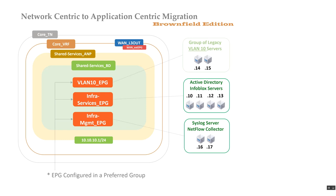They're grouped at a macro level. You could call out domain controllers and Infoblox servers separately, but in practice customers prefer the macro level because it's easier to get comfortable with ACI. Doing micro-level segmentation in a brownfield is going to be messy, so I recommend starting at a macro level.